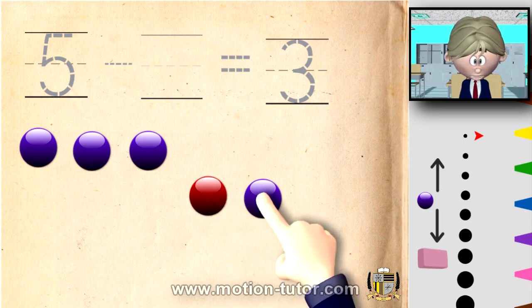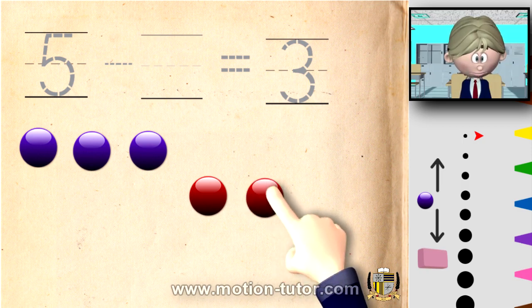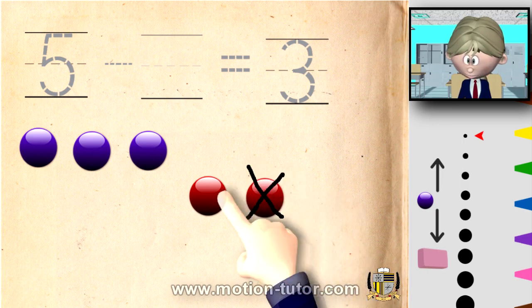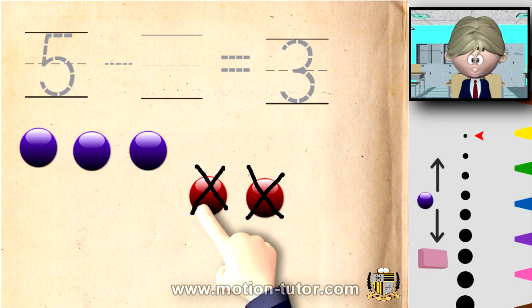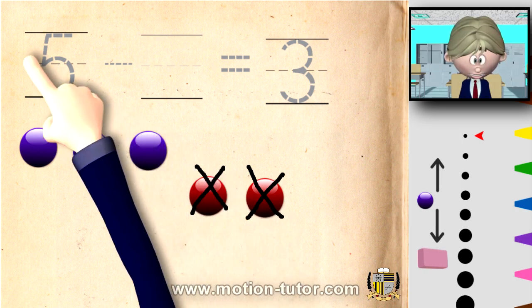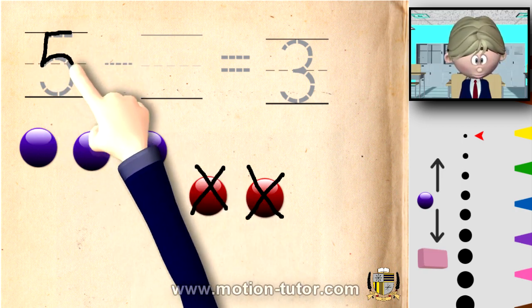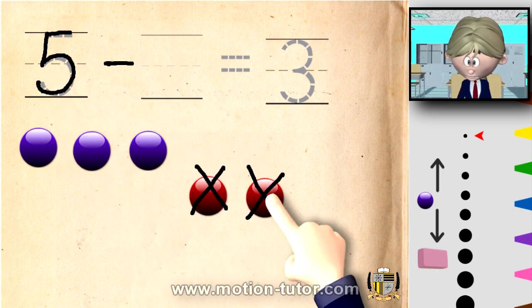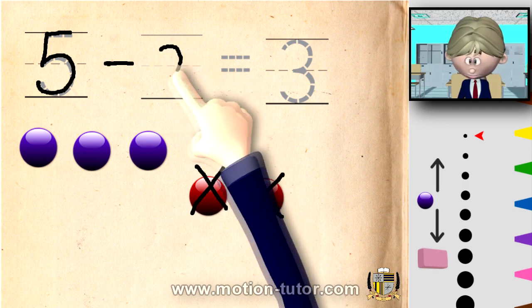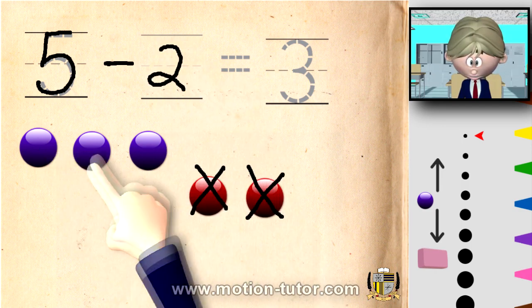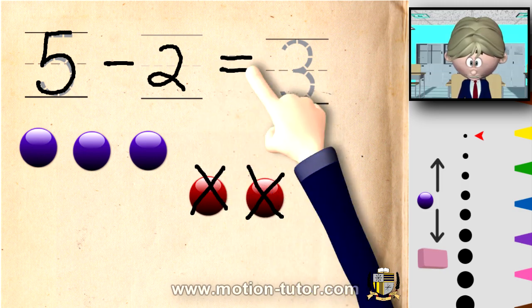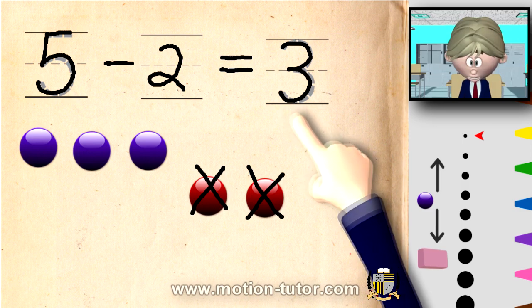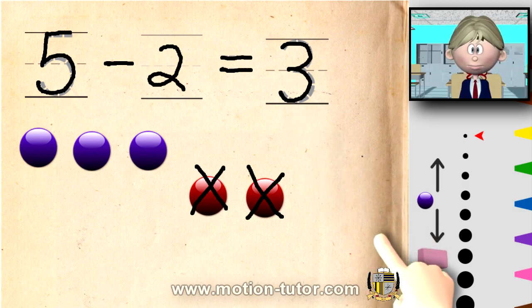It's going to be one and two — these two. Five take away these two, and we're left with one, two, three, so it's equal to three. We're left with one, two, three. And that is all for this lesson — bye!